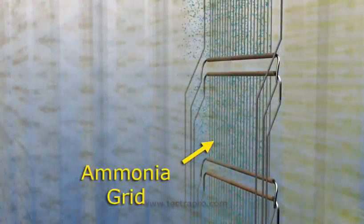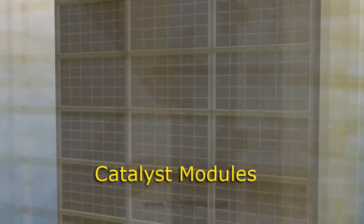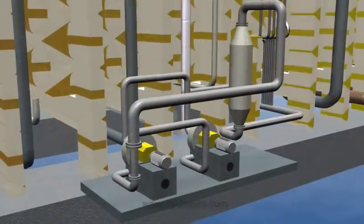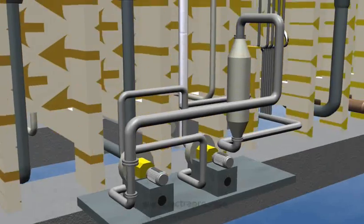The selective catalyst reduction ammonia header is located in box three and the catalyst modules are in box four. The ammonia vaporization skid is located on the ground level.